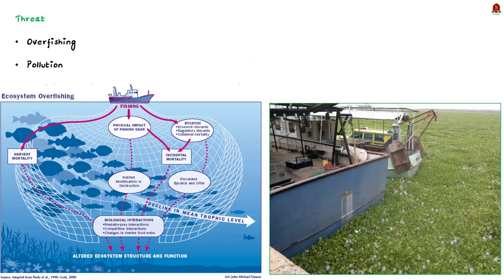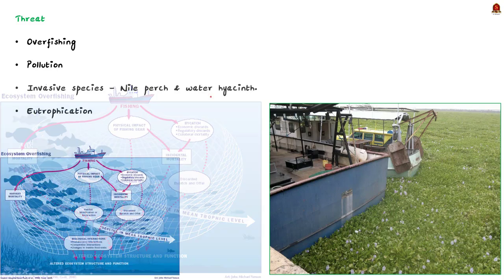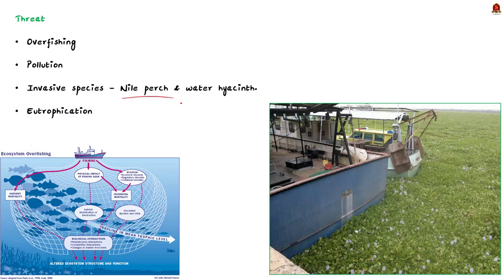Coming to the present condition of the lake, it is threatened by the consequences of overfishing. It is also threatened by ecological damage caused from pollution and invasive species such as the Nile perch and water hyacinth.